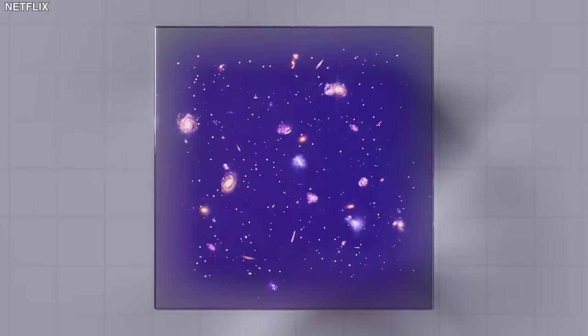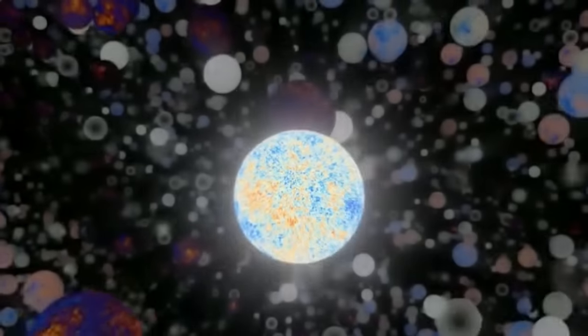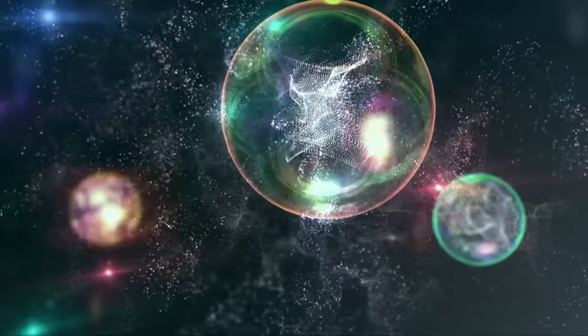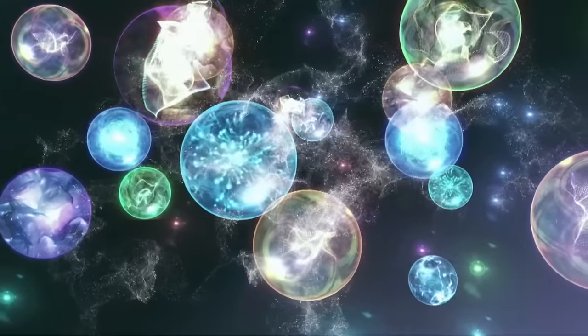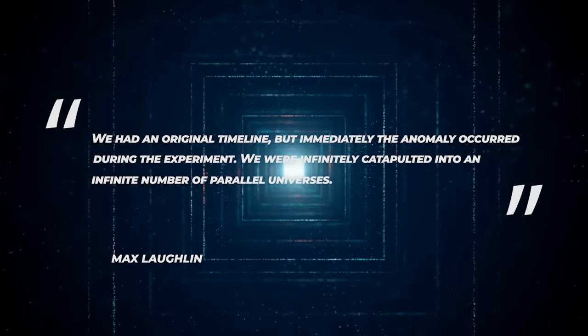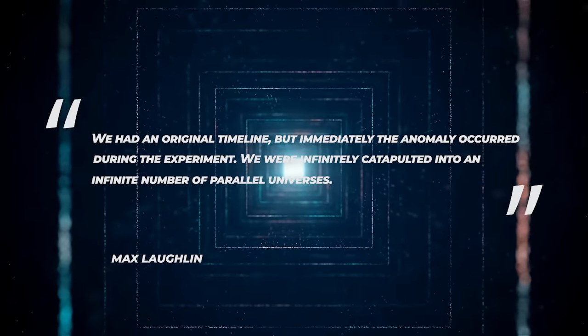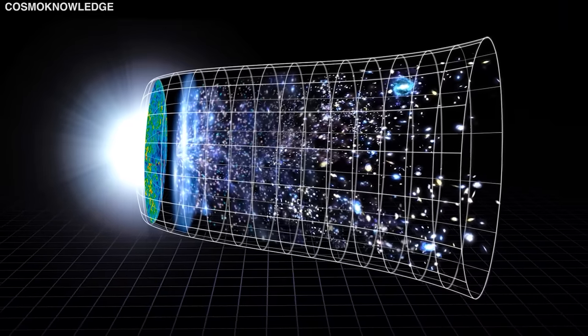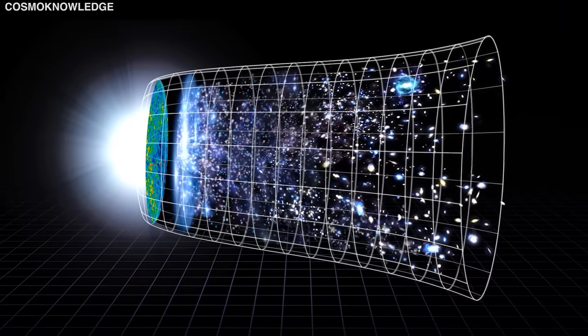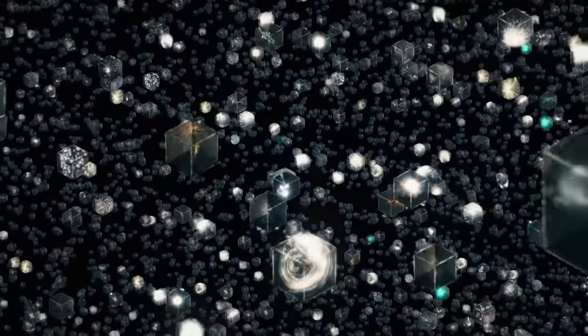Max went on to explain that there are an endless number of parallel universes in our multiverse. Similarly, there are an endless number of these universes. In each reality, we are hurled into an endless number of parallel realities. He said, we had an original timeline, but immediately the anomaly occurred during the experiment, we were infinitely catapulted into an infinite number of parallel universes. As we talk, a reality switches into another universe somewhere along the way. This representation of limitless universes is our current reality.